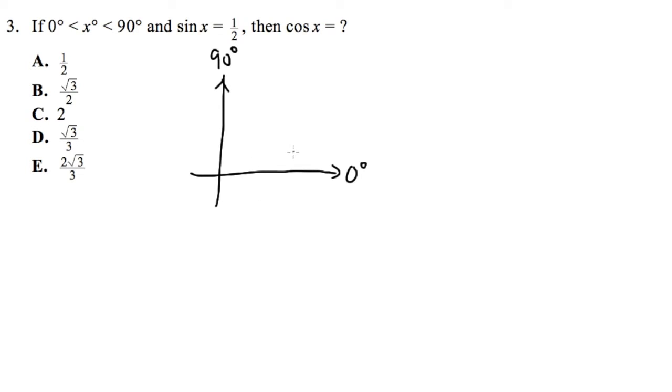Our strategy is to come up with a right triangle in the first quadrant. That way, we can do the sine, cosine, tangent, this kind of business. How can we do that? We have to utilize this equation. Let me put it down: sin x equals 1/2.